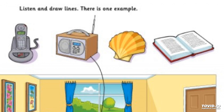Part three. Look at the pictures. Now listen and look. There is one example. What's Pat doing? Is Pat at your house? Yes, she is. Is she playing in the garden? No. She's reading in the living room. Can you see the tick? Now you listen and tick the box.